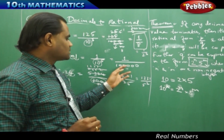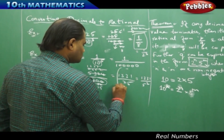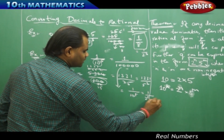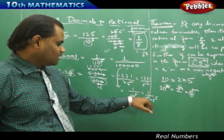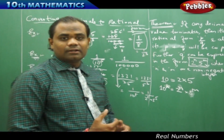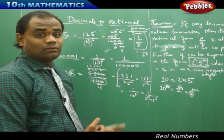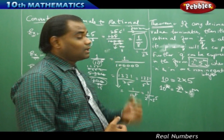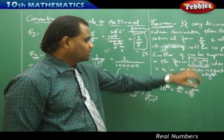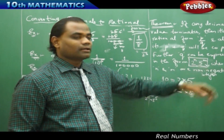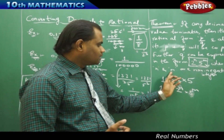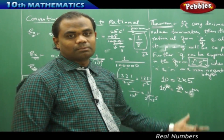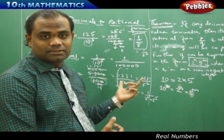Similarly, 1 over 100000 can be written as 1 over 10 power 5, that is 2 power 5 into 5 power 5, so m=5 and n=5. Every terminating decimal value expressed in its most simplified rational form will have its denominator in the form 2 power n into 5 power m, where n and m are non-negative integers — this is the theorem.